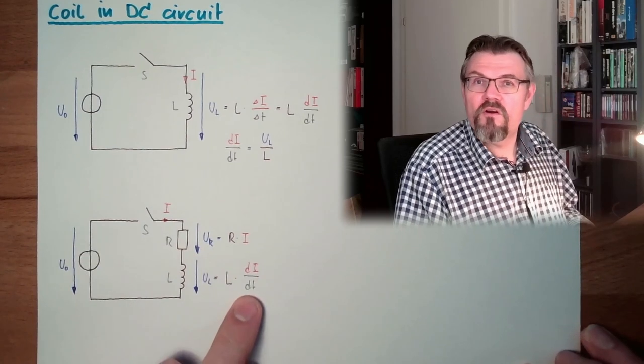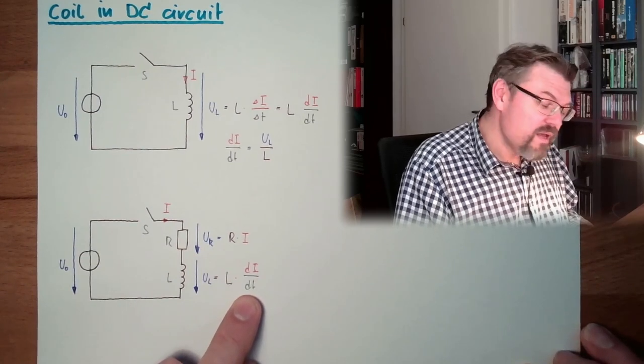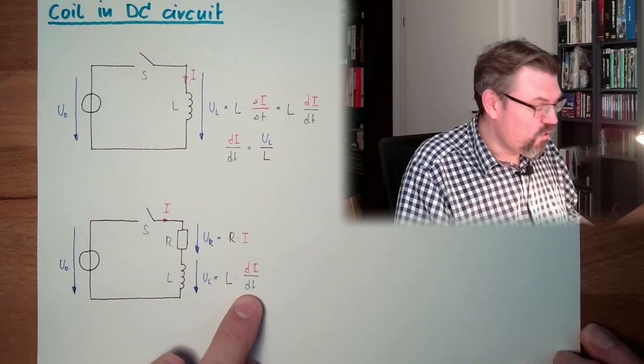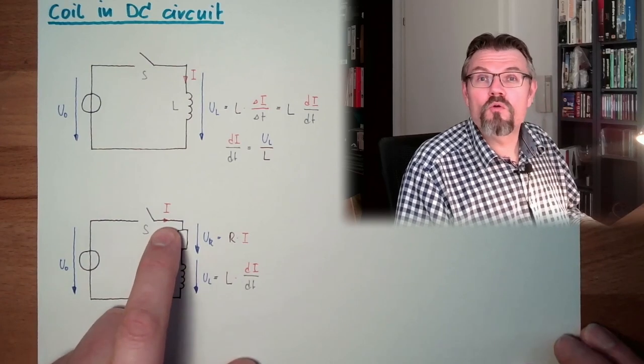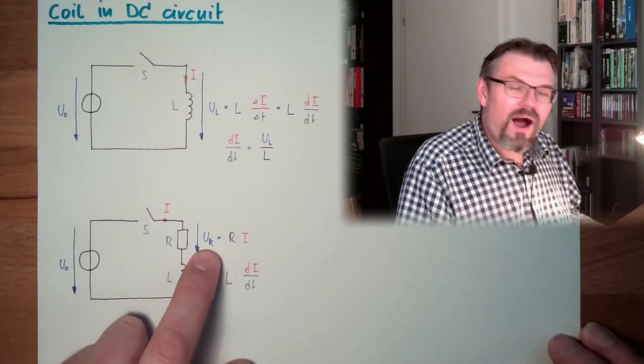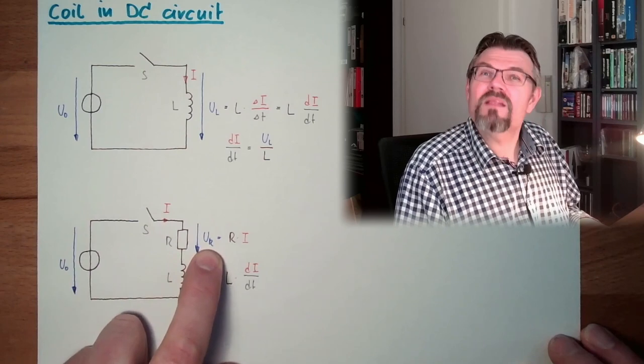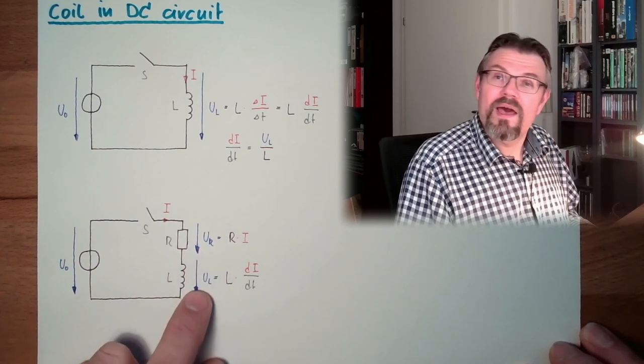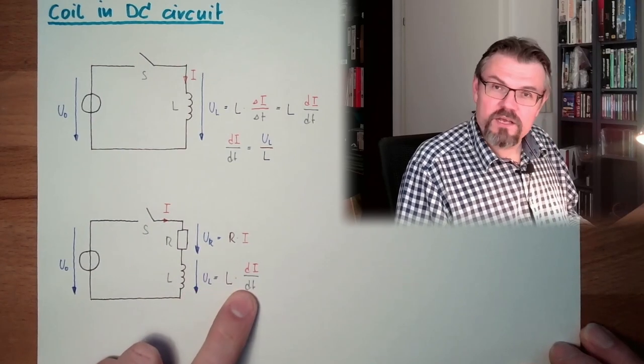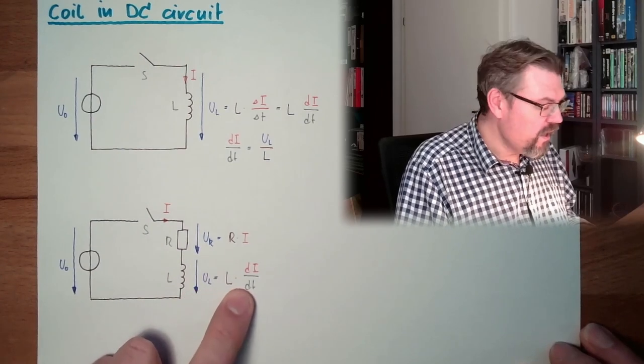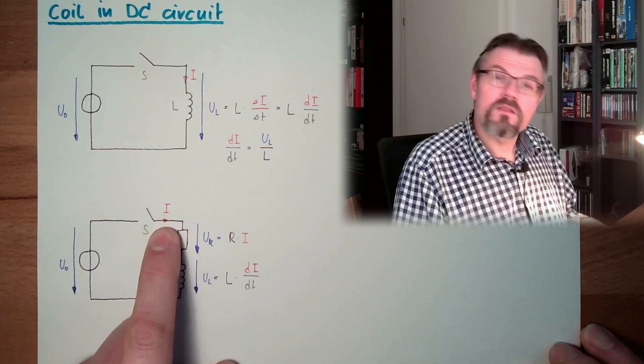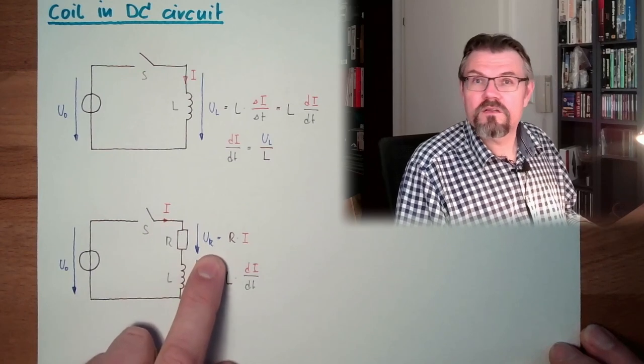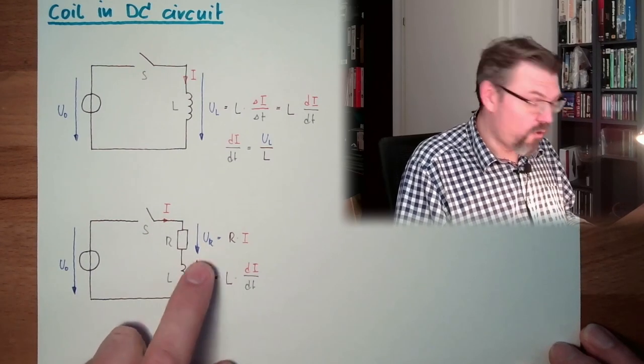If the change rate of the current is a little bit smaller, the current will not grow that fast. So our UR is still getting bigger, but not as fast. If UR is getting bigger, UL is getting smaller. And the change rate of the current is getting smaller. So I is still growing, but not that fast. So UR is still growing, but not that fast. But still UR is growing, so the change rate of the current will drop over time.